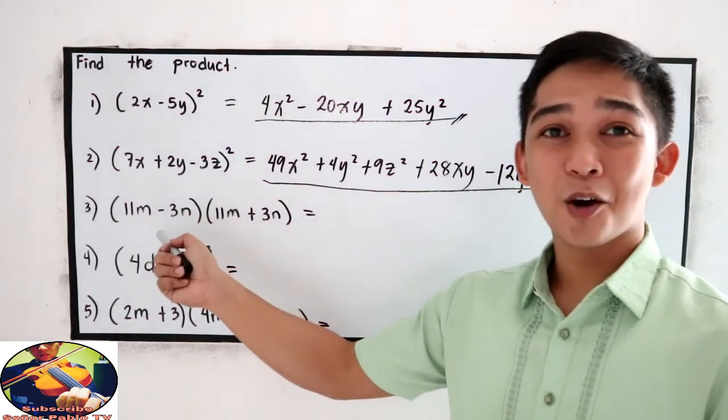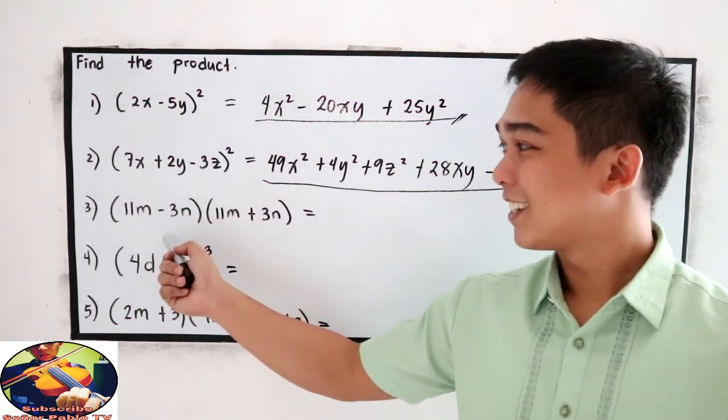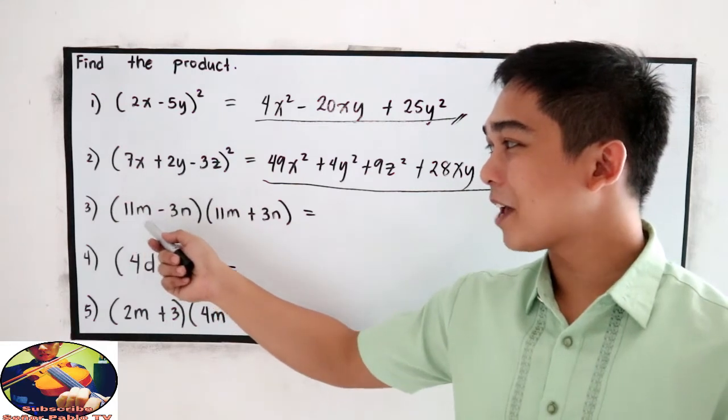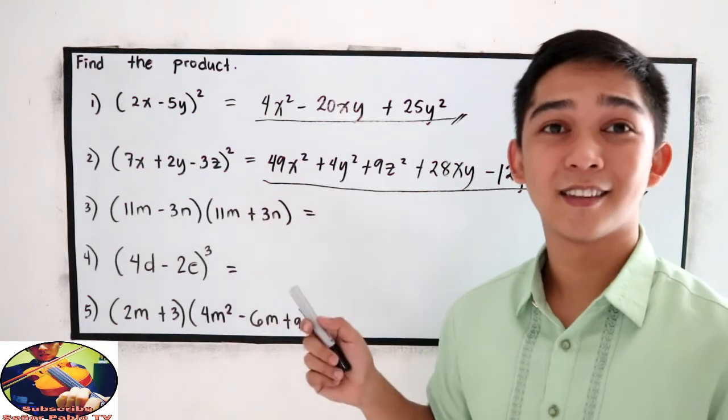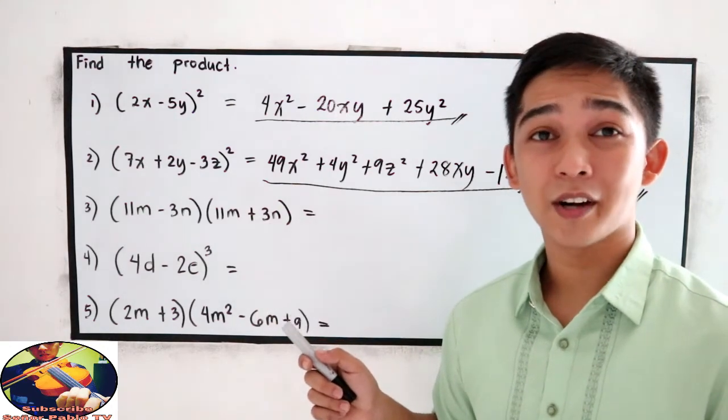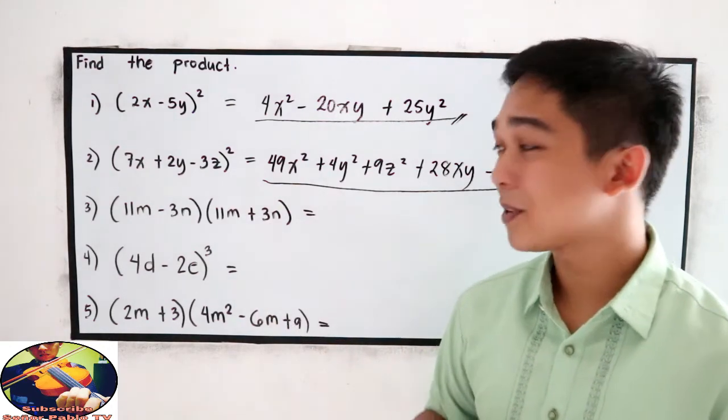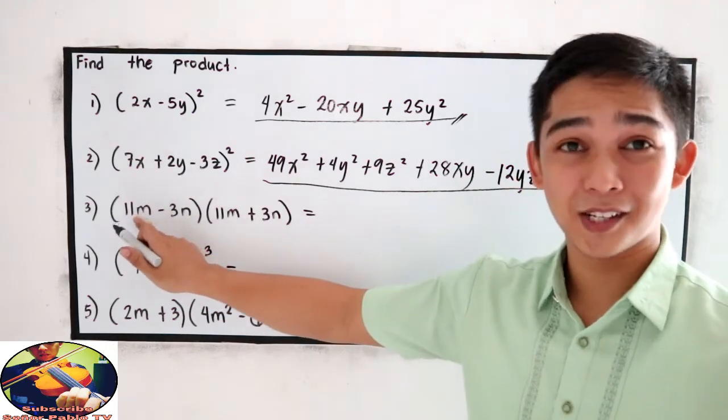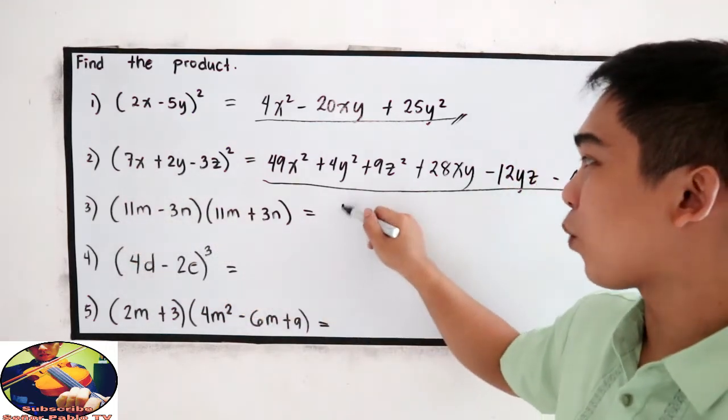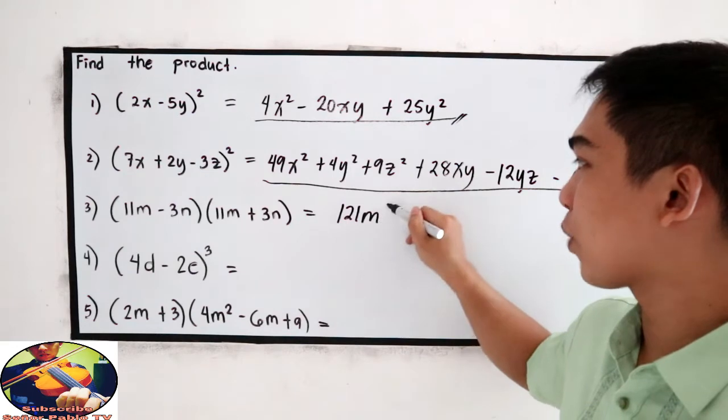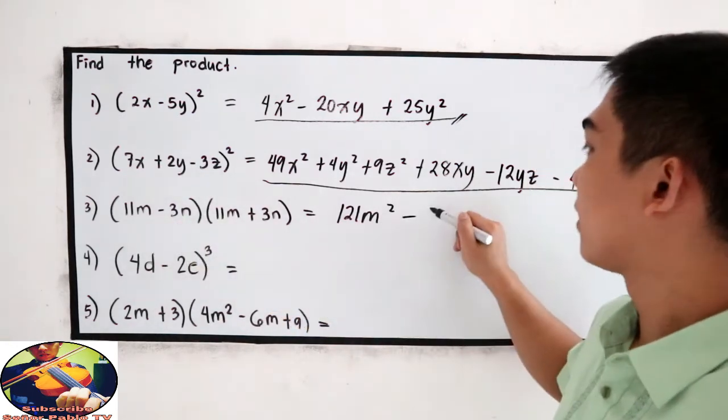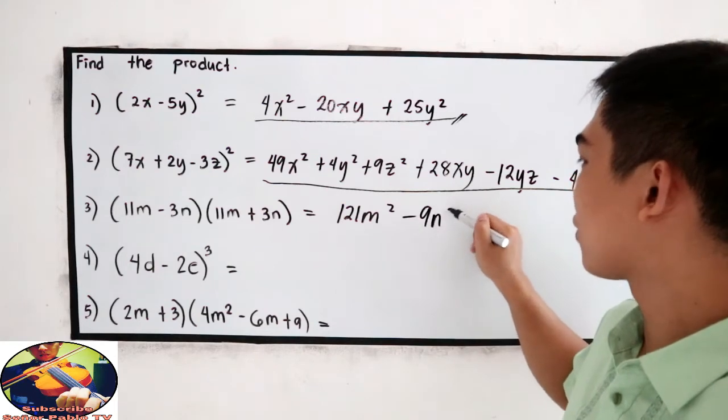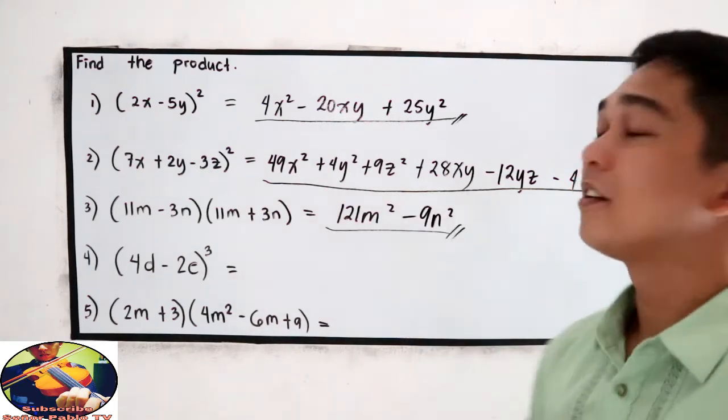Let's proceed in number 3. Quantity 11m minus 3n times quantity 11m plus 3n. Difference of the squares. Simply, square the first term. 11 times 11, 121m squared. Minus, square the second term, 9n squared. Final answer.